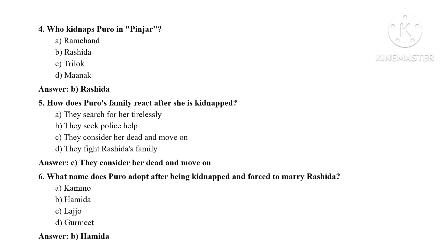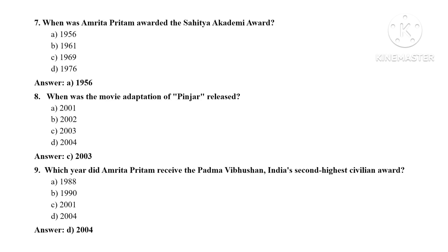What name does Puro adopt after being kidnapped and forced to marry Rashid? That is Hamida. She is a Hindu girl who has been abducted by Rashid, and she is given the name Hamida. When was Amrita Pritam awarded the Sahitya Academy Award? Along with characters, the plot, and the story, the most important thing about any work is the dates — significant dates related to the work, the writer, and the awards. Please note these down. The date when Amrita Pritam received the Sahitya Academy Award is 1956.